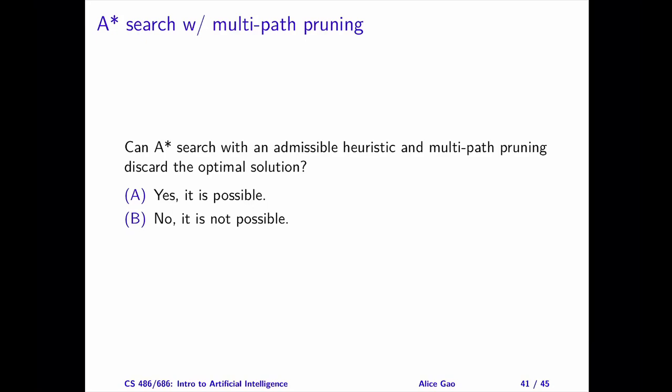Next, let's consider A-star search. Assume that we are running A-star search with an admissible heuristic function. Can A-star search with multipath pruning discard the optimal solution? If your answer is no, please explain why — give an informal proof. If your answer is yes, please come up with an example of when this happens. Pause the video and come up with your answer.